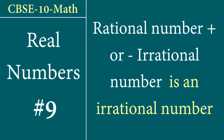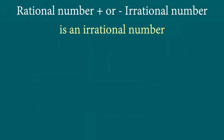So let's find out how we can actually prove or solve these types of questions. Let's take an example. Let's write a rational number — say 2 — and say plus square root 3, and we want to prove that this is an irrational number.